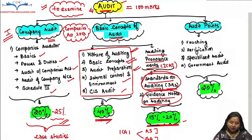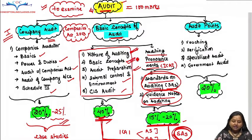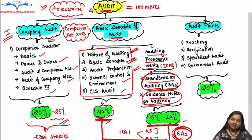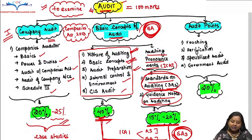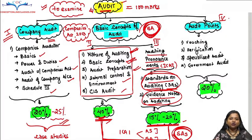Practically speaking, whether it is the basics covering around 40 marks or the pronouncements covering 15 to 20 marks, SAs are covered in both. As we go further we'll see that in nature, basics, and internal control, the Standards of Auditing play a role, and we will learn them accordingly – because it is a highly scoring subject. So the second part will include Standards of Auditing, and the fourth element will be Audit Pointings, where we follow specific instructions, guidelines, and checklists from the Institute.